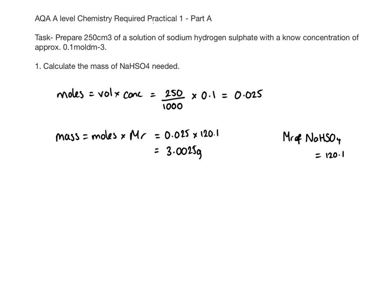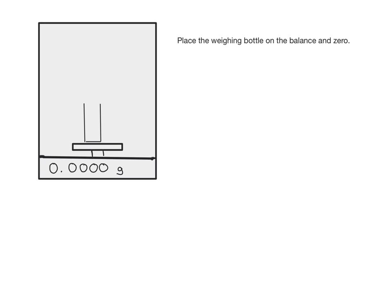This is only the approximate mass because we only need approximately a 0.1 solution, so it doesn't matter if you don't get it spot on. Place a clean empty weighing bottle on an analytical balance and zero the balance. Add about 3 grams of sodium hydrogen sulfate to the weighing bottle - around 3 grams will do.